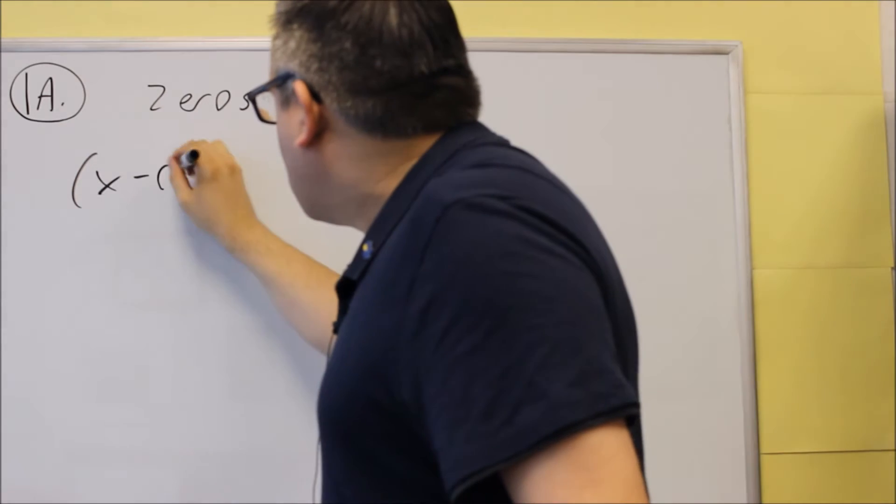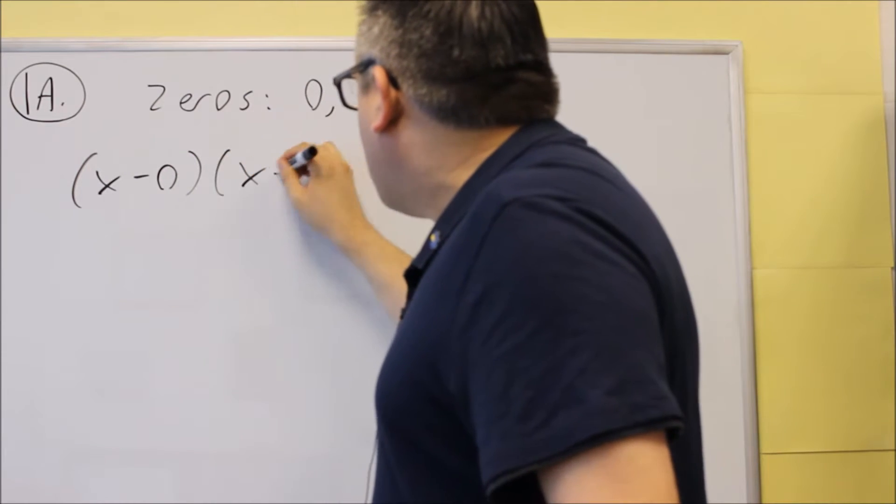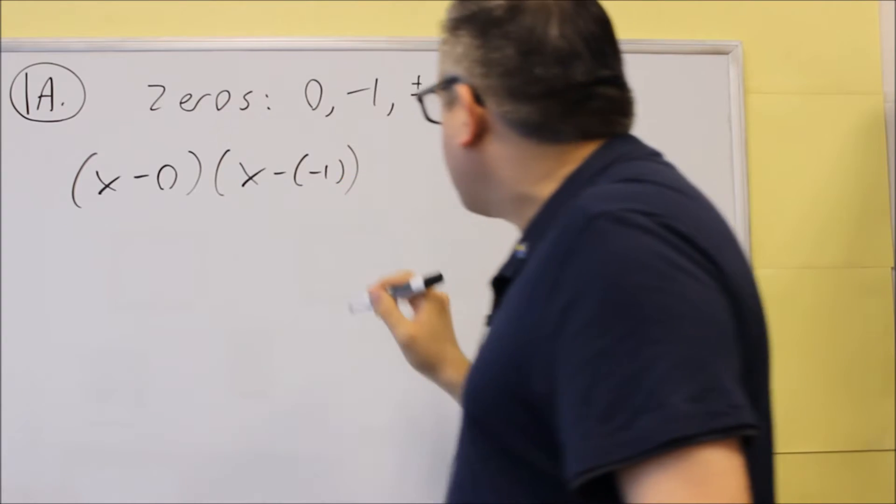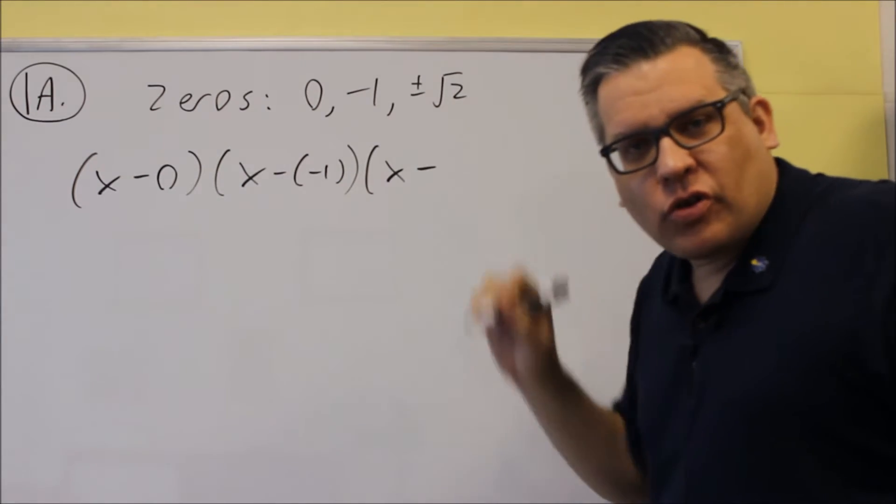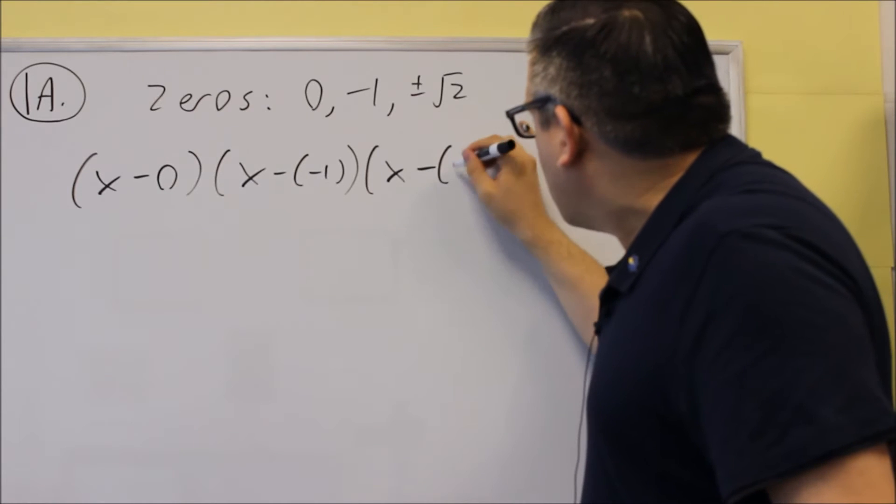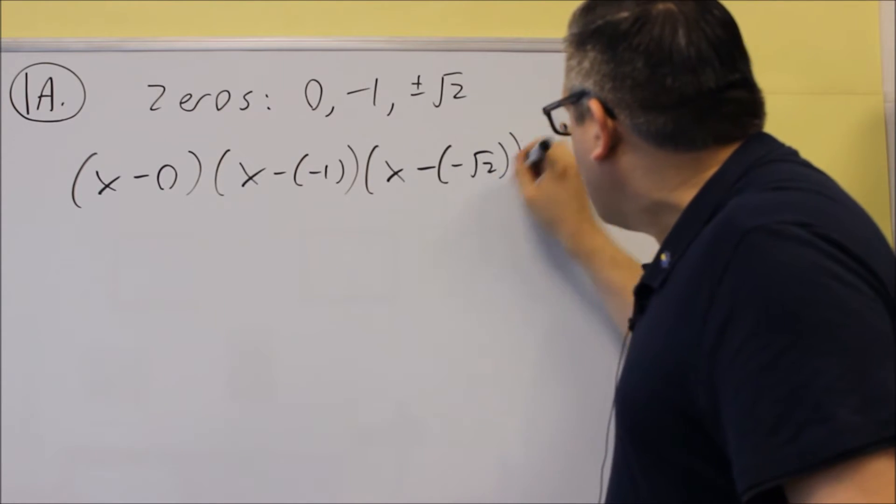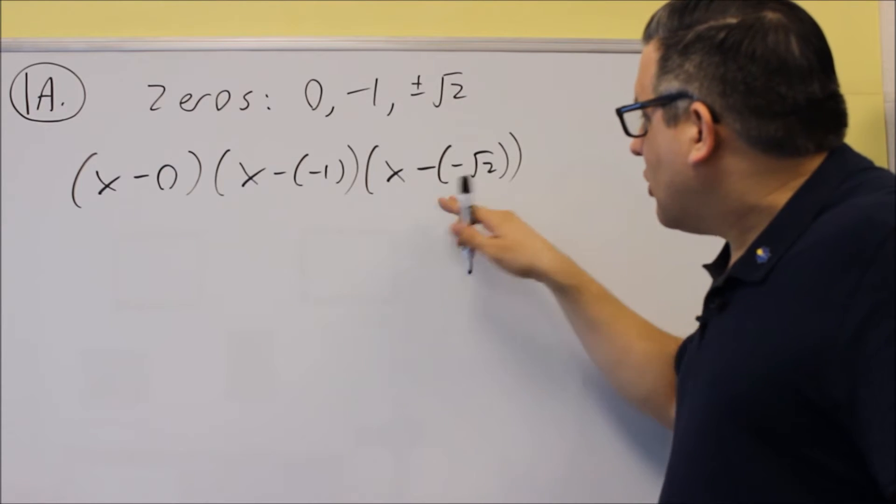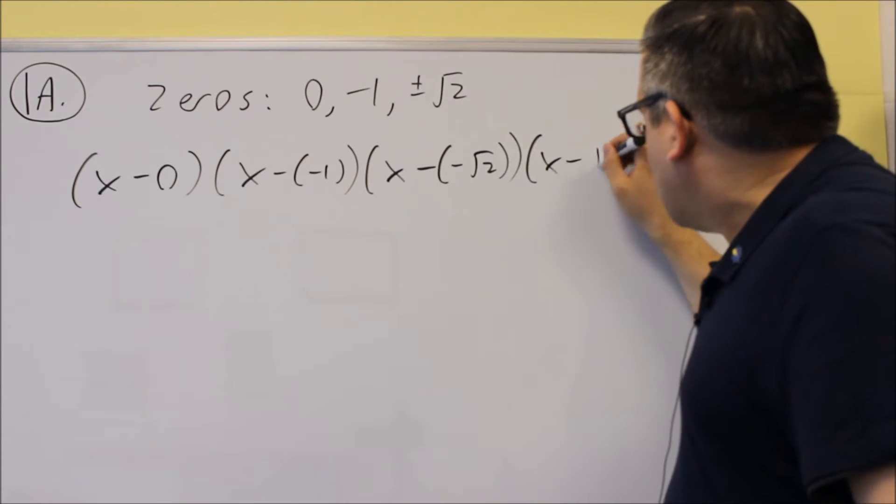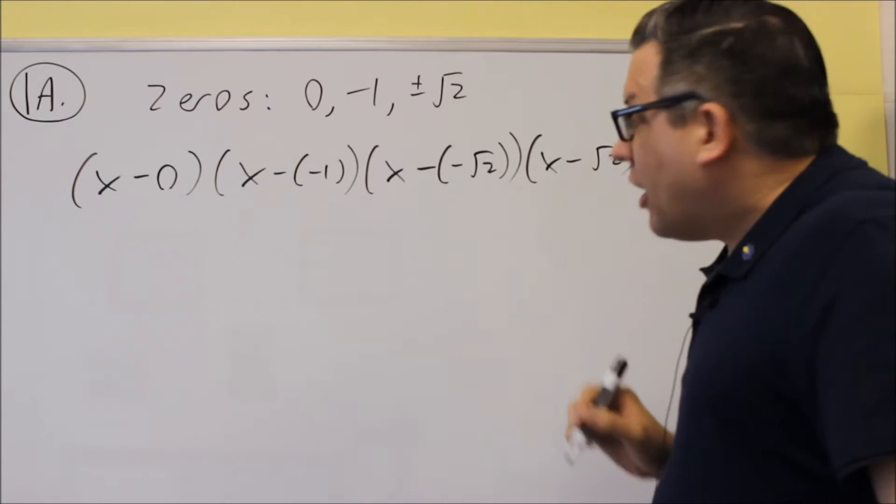So I have x minus 0, x minus negative 1, x minus, okay, so I have a positive root 2 and a negative root 2, so we first can start by subtracting this one, and the order doesn't matter in which you write these. So I have x minus a negative square root of 2, and I have x minus, it's a regular square root of 2.